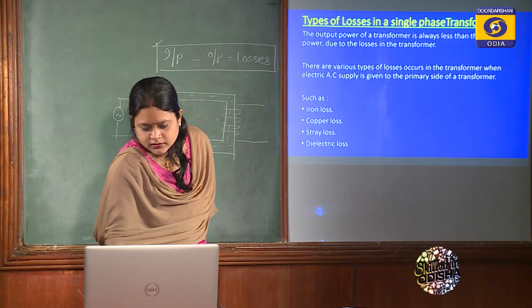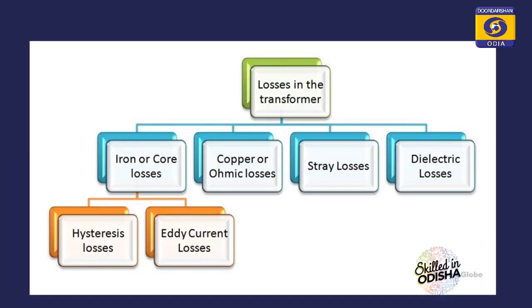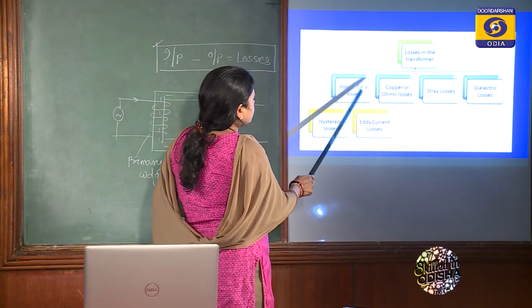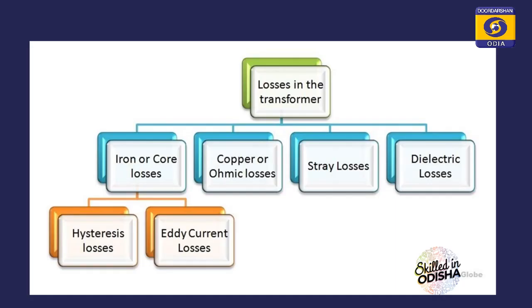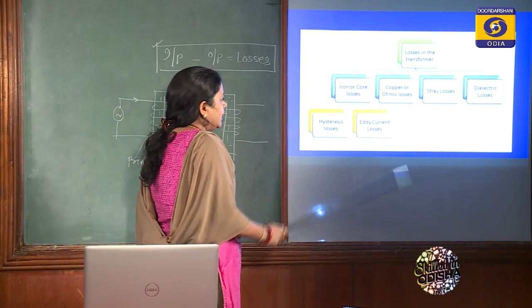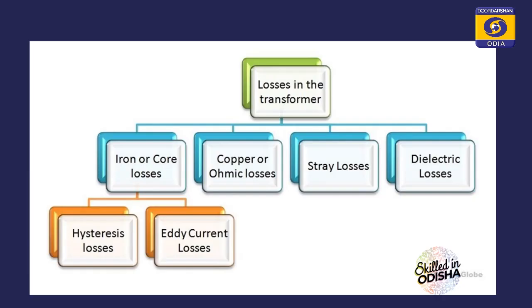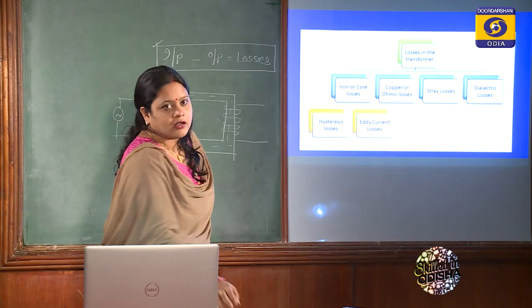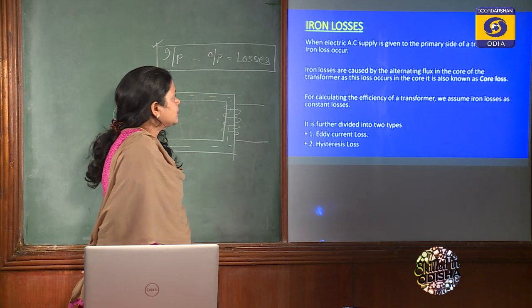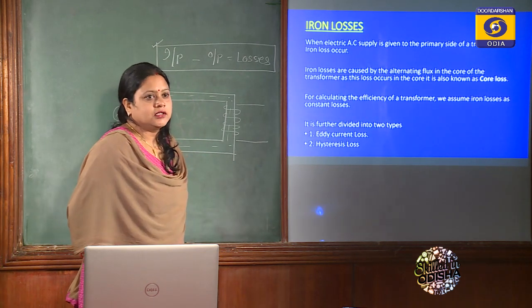The losses in the transformer are: first, iron loss, also known as core losses; second, copper loss, also known as ohmic losses; next is stray losses; and last is dielectric losses. Iron or core losses are further divided into two types: one is hysteresis loss and the second is eddy current loss.